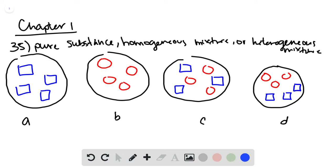Problem 35 asks you to determine whether each of these graphics shown here represents a pure substance, a homogenous mixture, or a heterogeneous mixture.